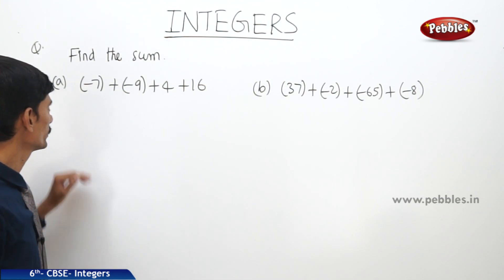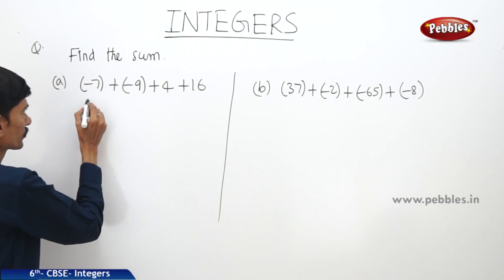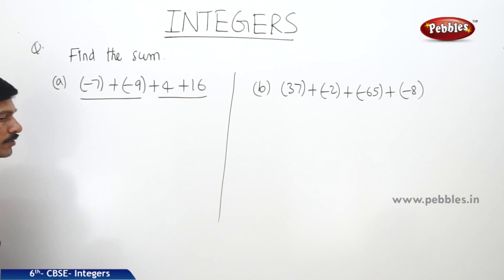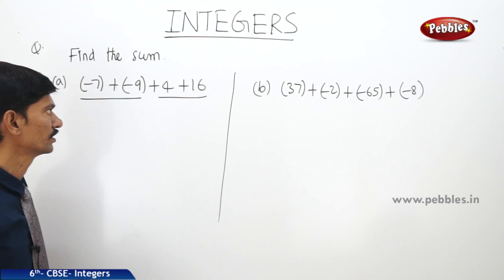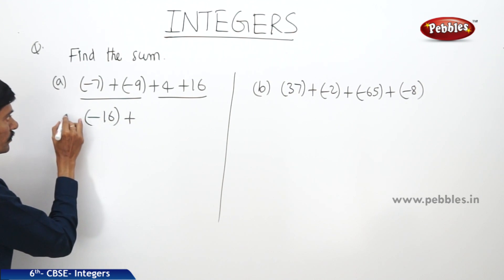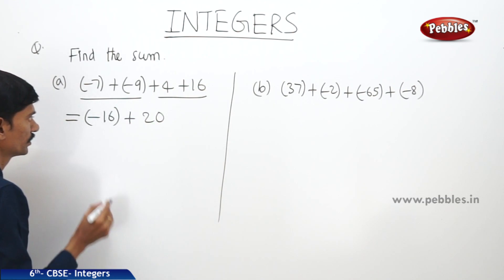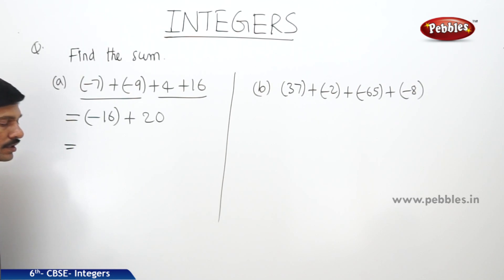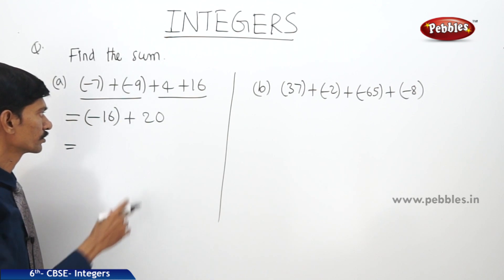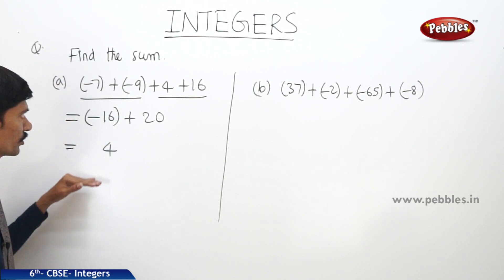Next, find the sum of (-7) plus (-9) plus 4 plus 16. The first two integers are negative and the last two are positive. Adding the two negatives: (-7) plus (-9) is -16. Adding the two positives: 16 plus 4 is 20. Now subtracting the smaller from the bigger: 20 minus 16 is 4, and the bigger number 20 has a plus sign, so the final sum is 4.